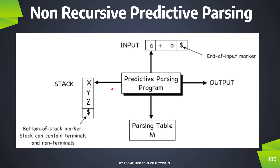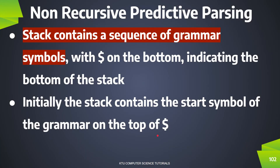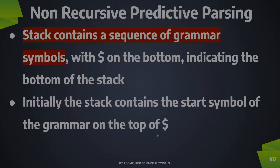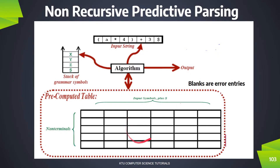We have two inputs: one is the stack top symbol — that is the current top — and the other is the Input Buffer. We use these to make a decision via the Parsing Table. The Parsing Table is two-dimensional, with the row side being the non-terminal and the column side being the input symbols, which are terminal symbols plus $.